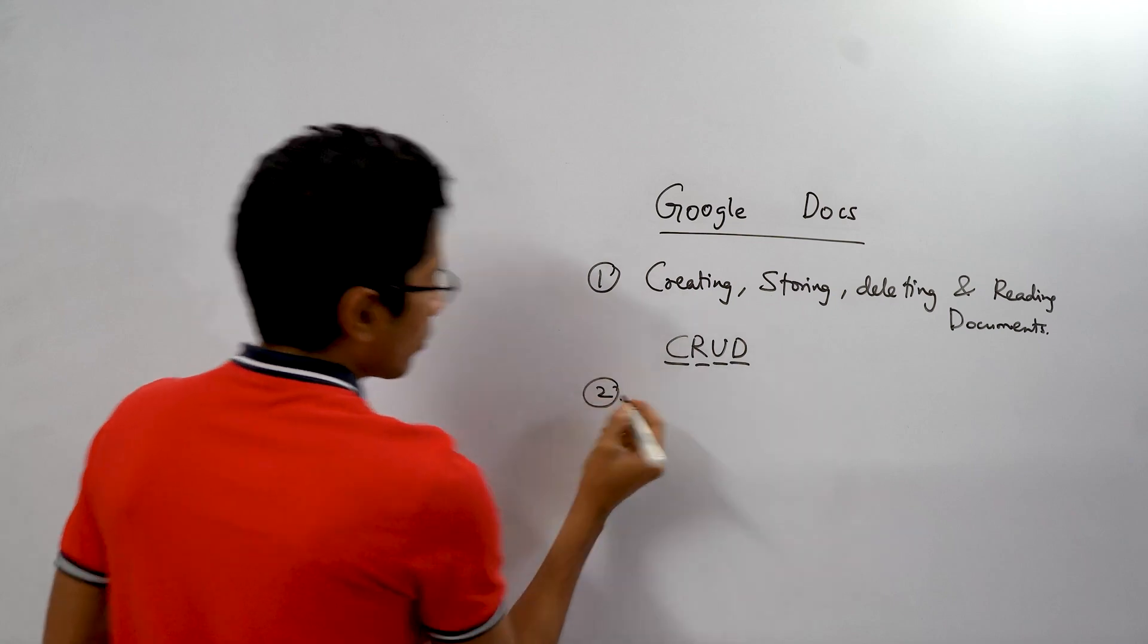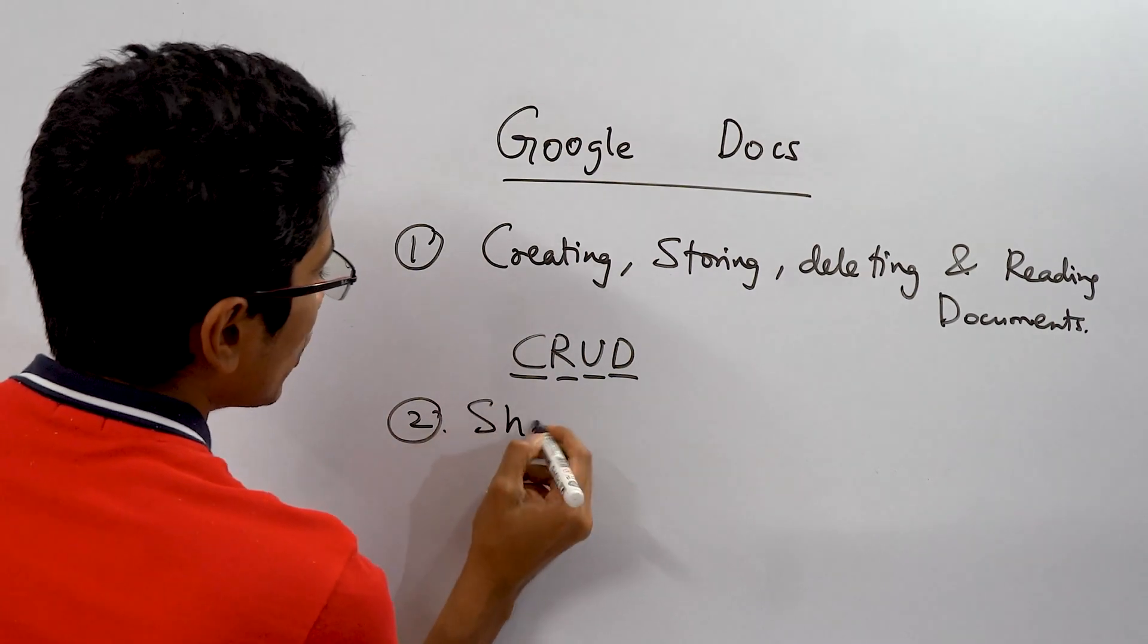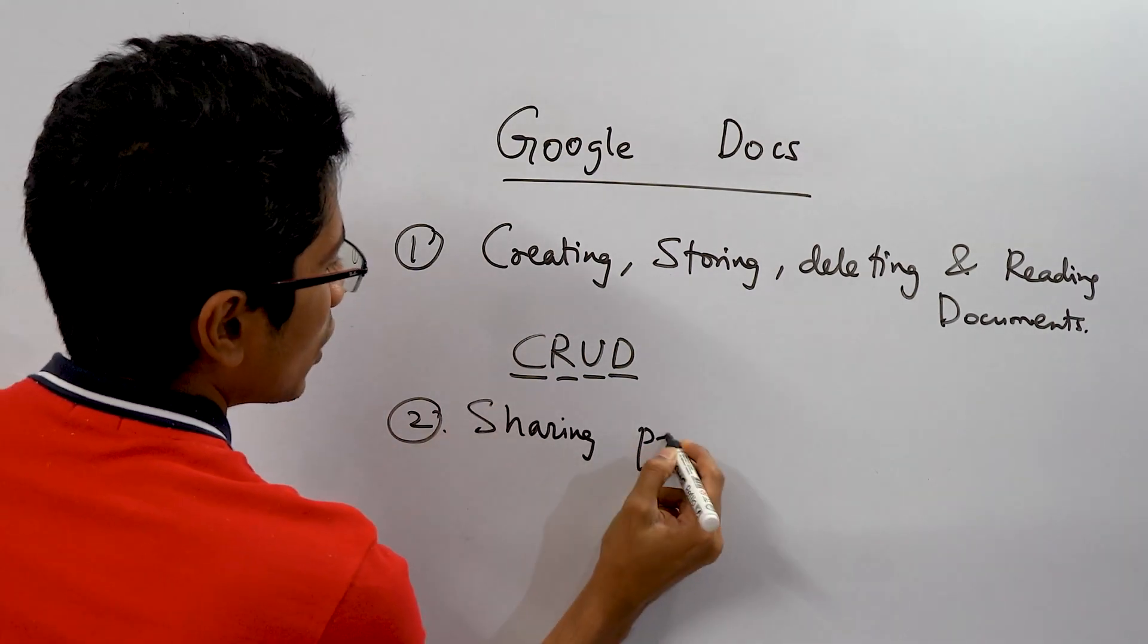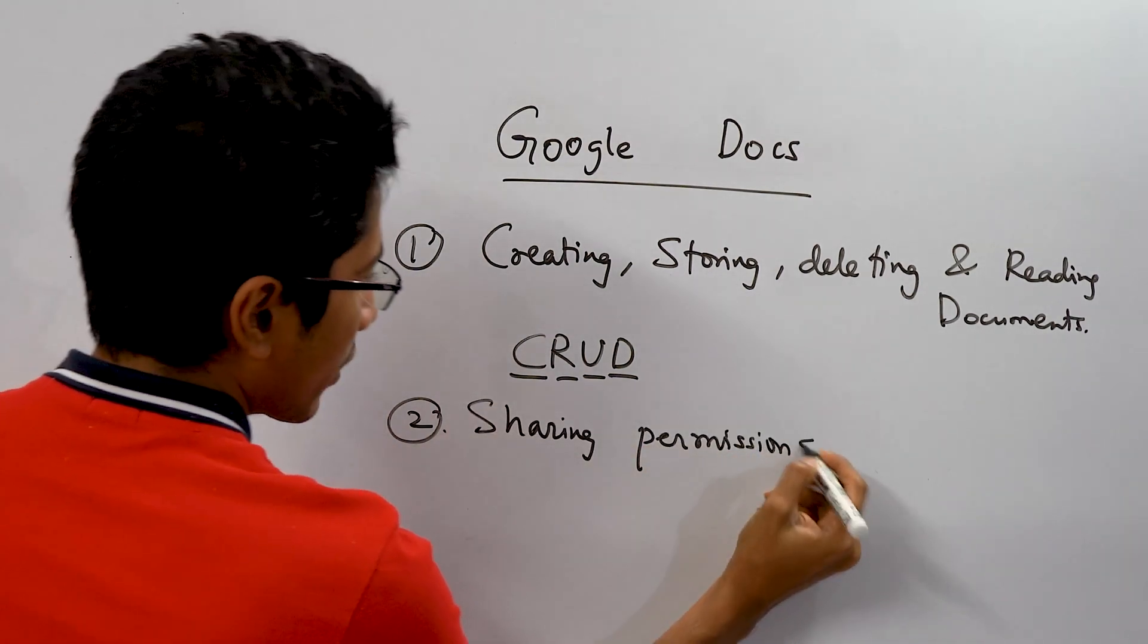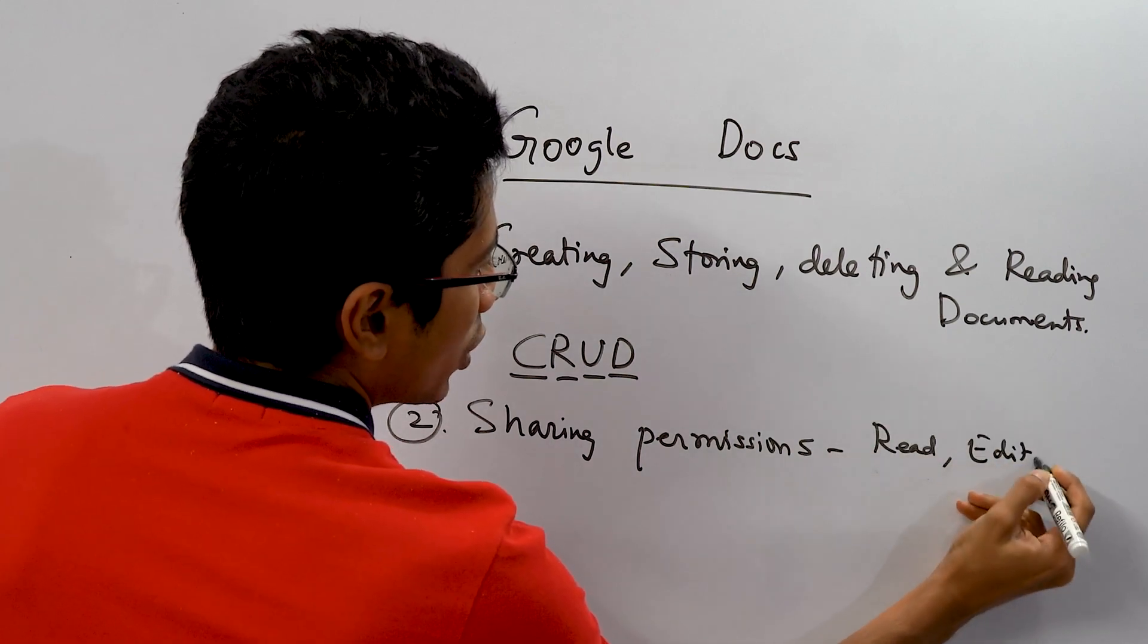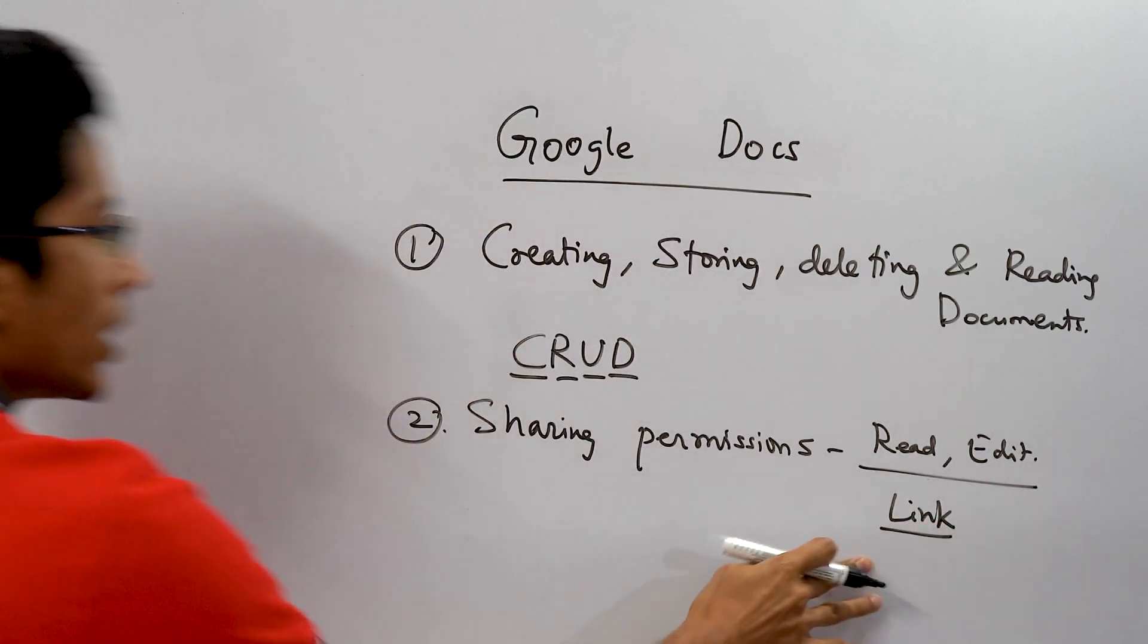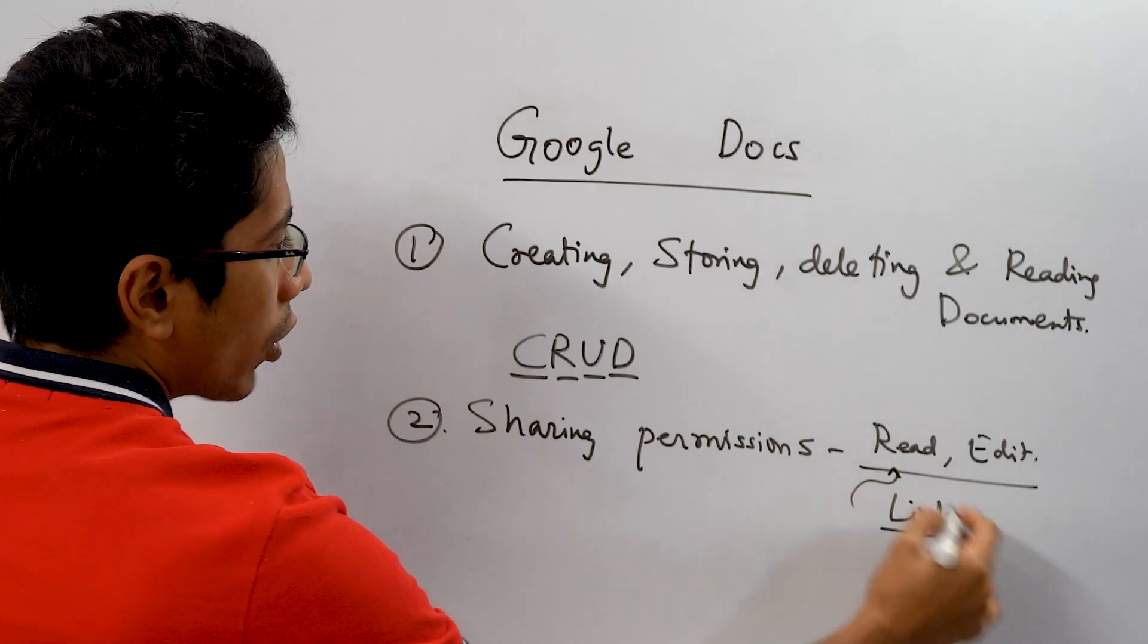The second feature that is very common in Google Docs is to actually share your documents. So for sharing you need sharing permissions. This includes reading and writing, or rather reading and editing for a Google Doc. You can also share the link of a doc which means that anybody with the link can either read or edit.